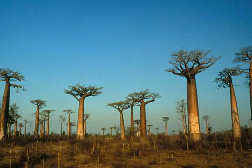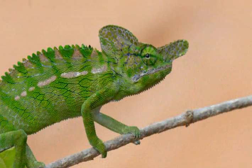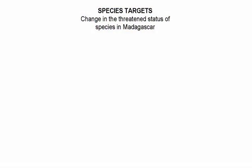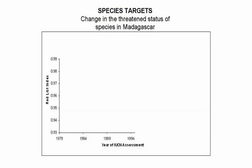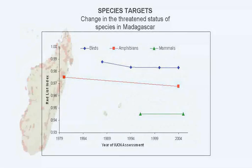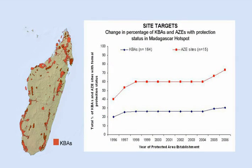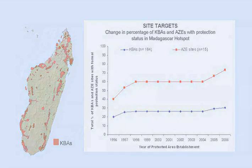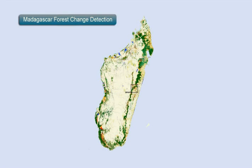We use a number of standard, globally applicable indicators for status monitoring. First, we track whether globally threatened species are recovering or declining by monitoring their status on the IUCN Red List. We also look at how many KBAs gain formal protection over time and how many improve in protection status.